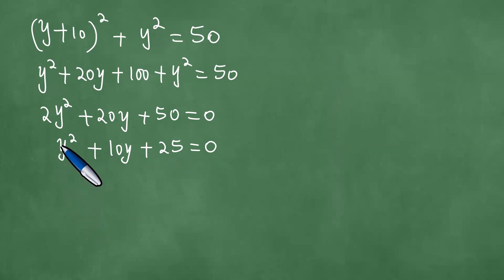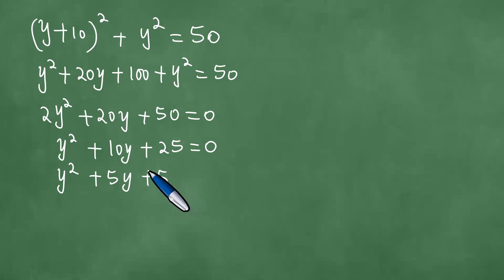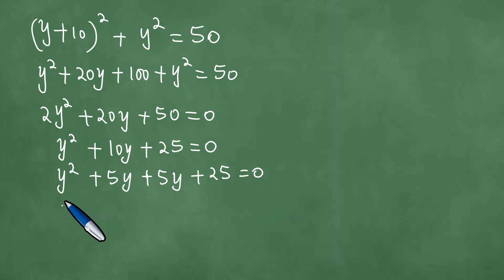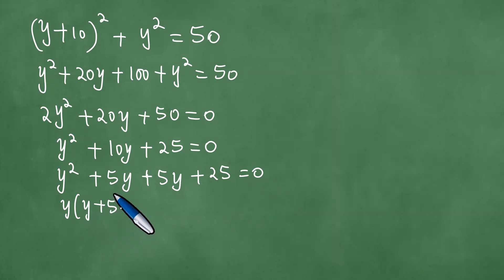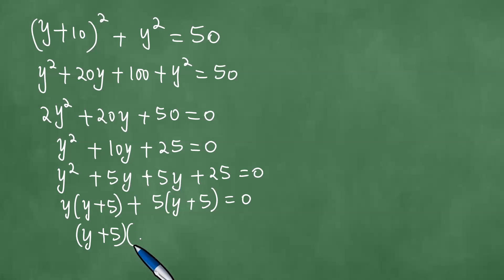Next we proceed to factorise. We multiply y squared and 25, getting 25y squared. We look for two expressions whose product is 25y squared but whose sum is 10y. Those are 5y and 5y. So we have (y plus 5) squared plus 25 equals 0, and the highest common factor gives us (y plus 5)(y plus 5) equals 0.